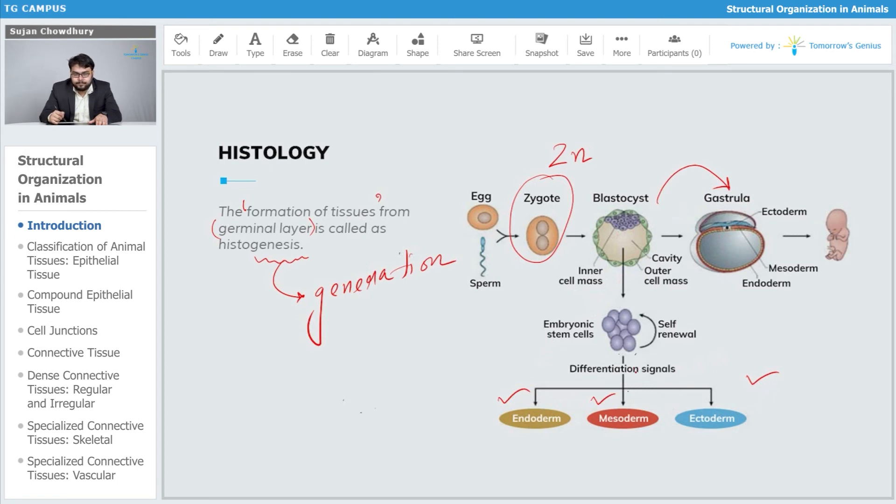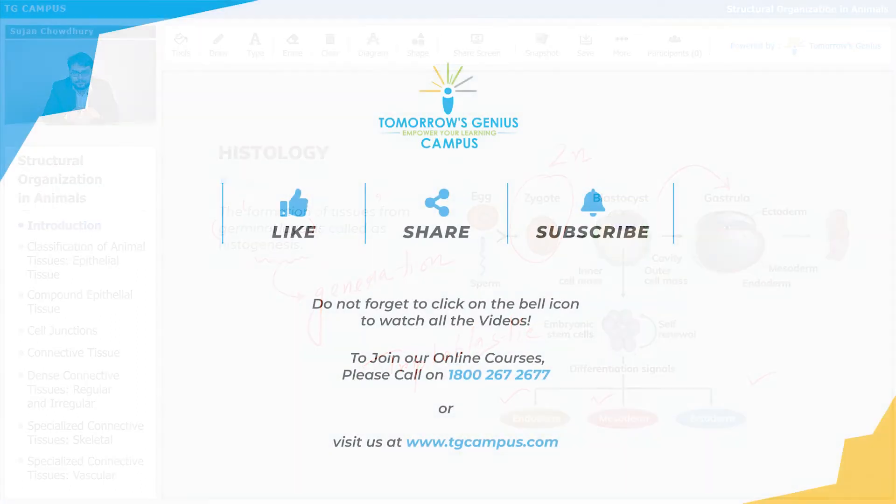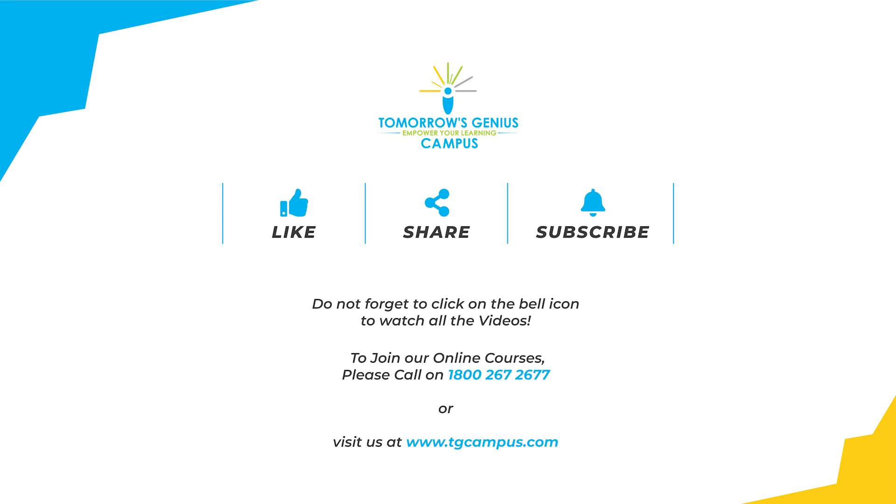That's why we are known as triploblastic organisms. The word tri means three - we develop three dermal layers, and that's why we are known as triploblastic.